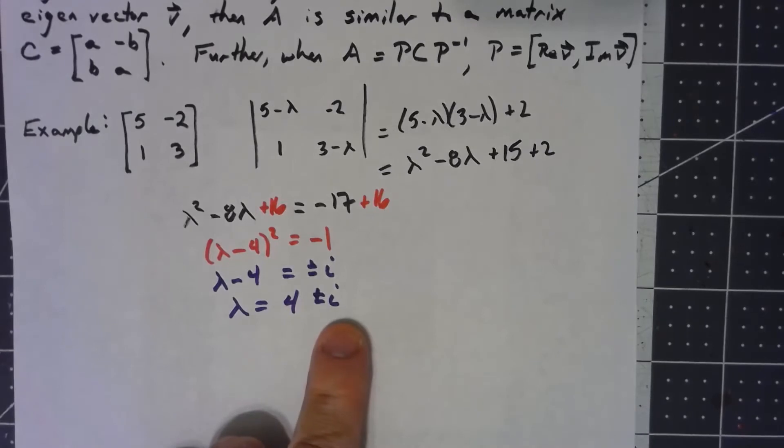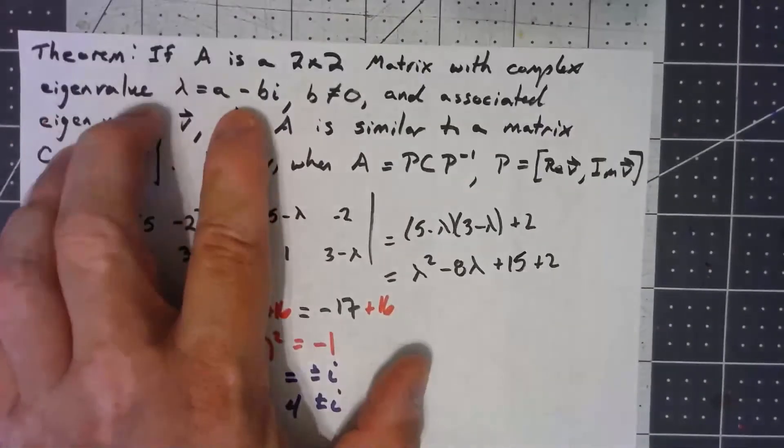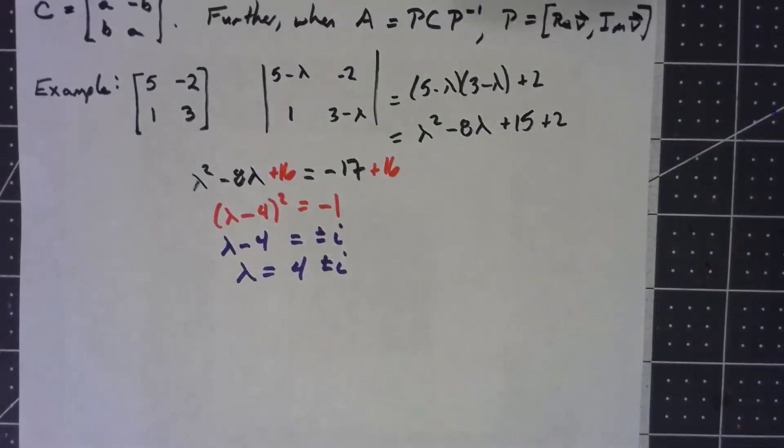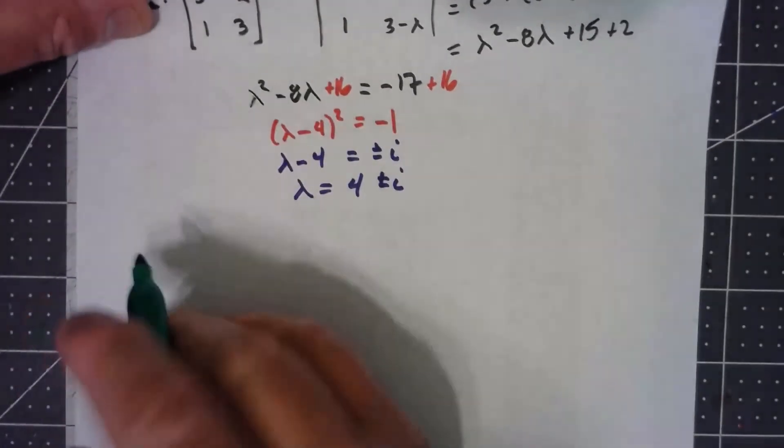Now I'm only going to focus on the one that more easily matches this form. So I'm going to have 4 - i.